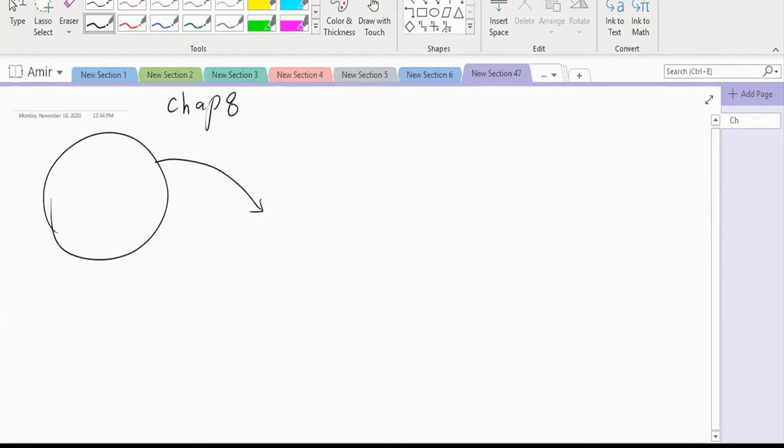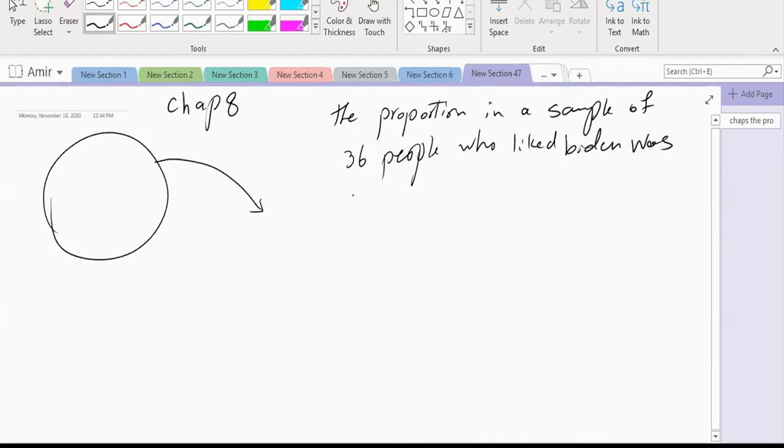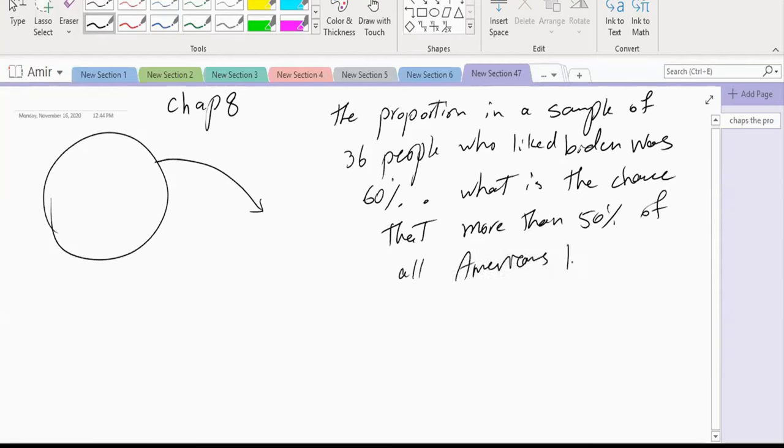The proportion in a sample of 36 people who liked Biden was 60%. What is the chance that more than 50% of all Americans like him?